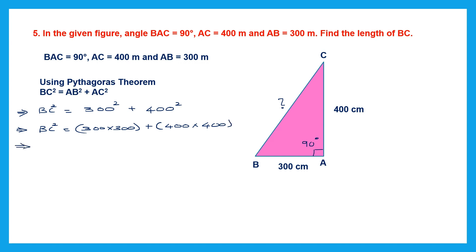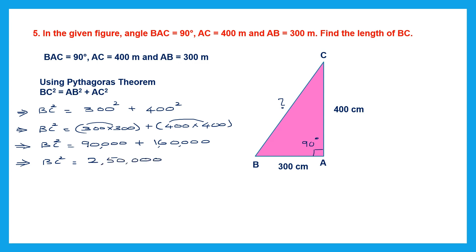BC² = 300 × 300 + 400 × 400. Three threes are nine, and there are four zeros, so 300 × 300 = 90,000. Four fours are sixteen, and there are four zeros, so 400 × 400 = 160,000. So BC² = 90,000 + 160,000 = 250,000. We need to find √250,000.